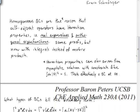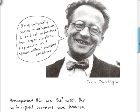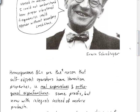So homogeneous boundary conditions, what I mean to emphasize here by putting this quote in from Schrodinger is just to say that homogeneous boundary conditions are indeed the reason that self-adjoint operators have Hermitian properties, that they give rise to real eigenvalues and orthogonal eigenfunctions, these oscillatory eigenfunctions that describe vibrational processes.